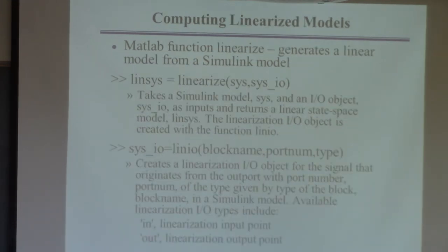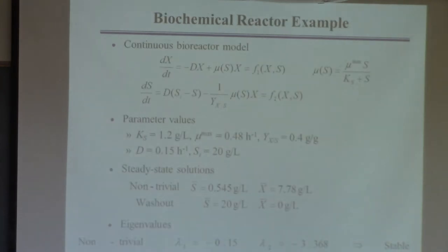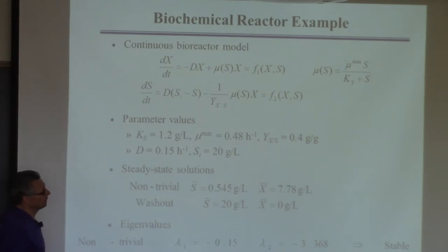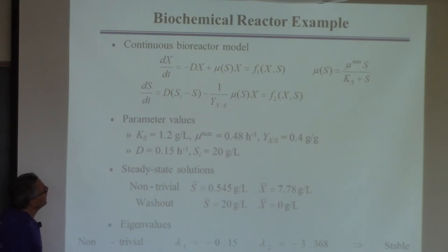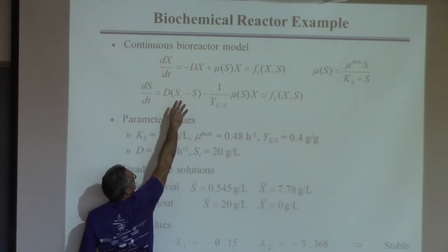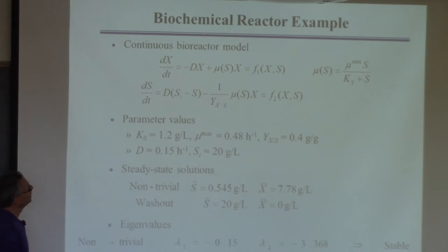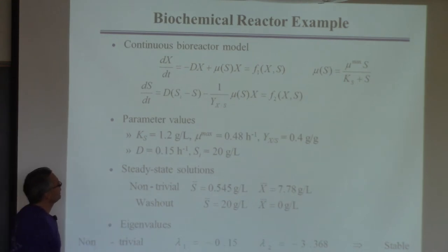Rather than explain this further in the abstract, let's start the example. First, we'd like to find the steady state model. Here's the model of interest: a continuous stirred tank bioreactor growing one cell type, with cell density x in grams per liter. We have one equation for the amount of biomass and one for the substrate that limits growth.